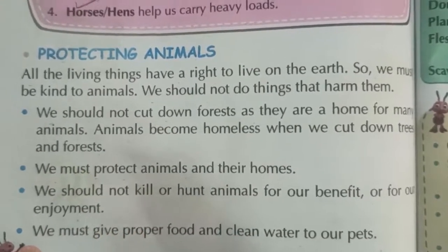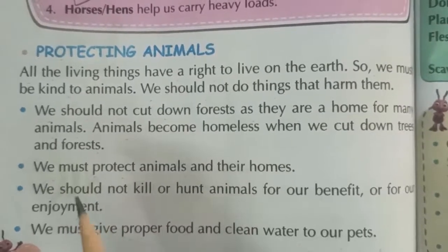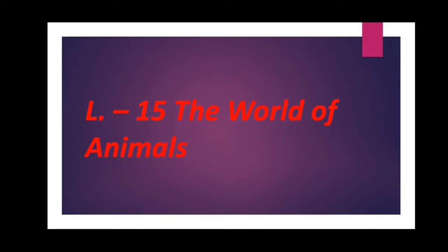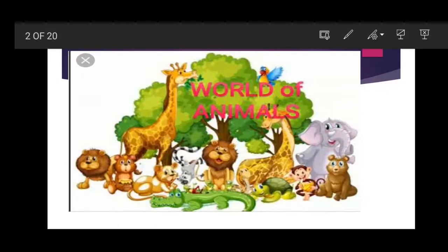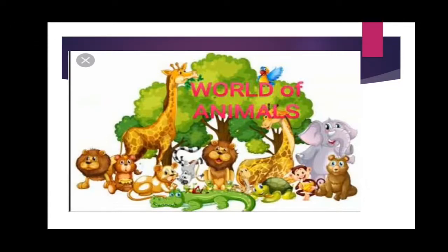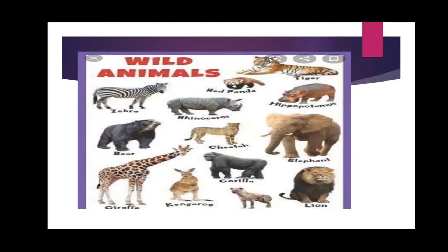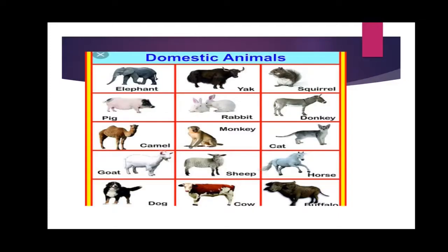Students, I hope you understand the lesson. Let's revise: Lesson number 15, The World of Animals. Our planet Earth is home to many kinds of animals. Animals are divided into different groups. First: wild animals — animals who live in a forest, like lion, tiger, zebra. Second: domestic animals — animals who live on a farm or at our homes, like dog, cat, horse. Some animals live in water and some fly in the sky.